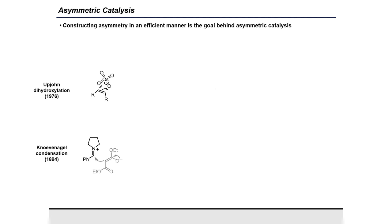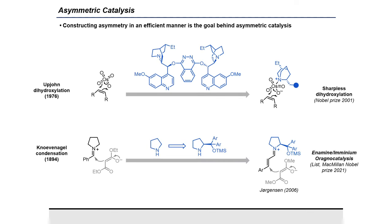Asymmetric catalysis is a really powerful way of accessing new stereocenters. Typically, the workflow starts from a known achiral reaction, such as the Upjohn dihydroxylation or the Knoevenagel condensation. Through a lot of different efforts, we can develop new ligands and new catalytic moieties in order to render these transformations enantioselective. Sharpless was able to render dihydroxylation enantioselective using quinuclidine ligands, receiving the Nobel Prize in 2001. Organocatalysis also received the Nobel Prize in 2021.